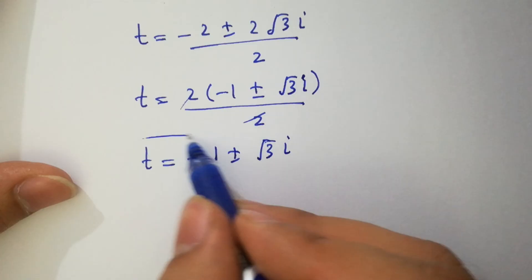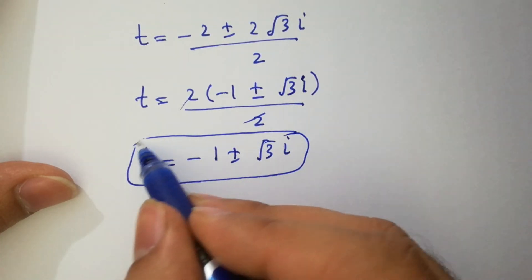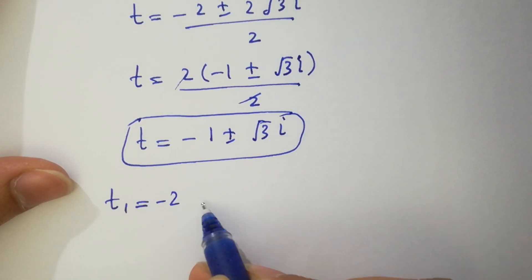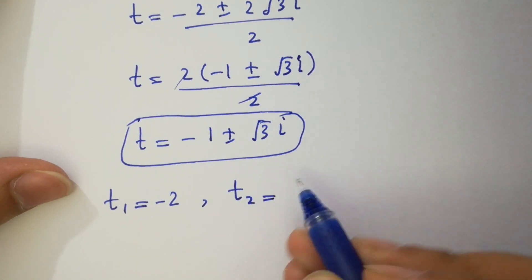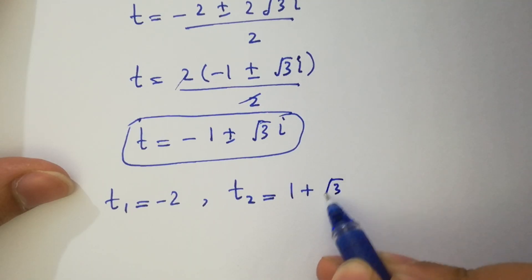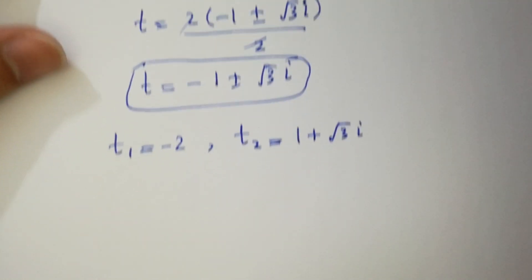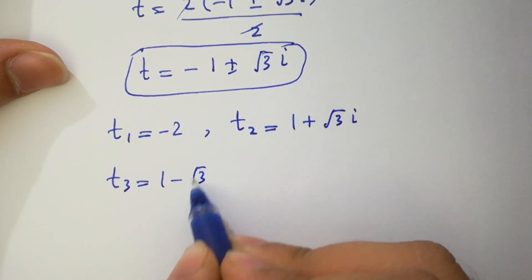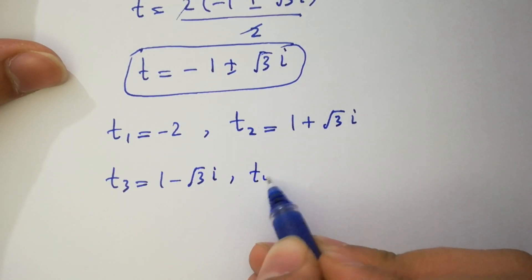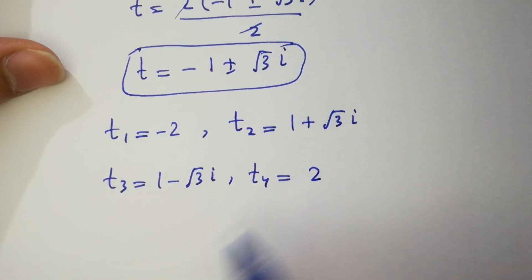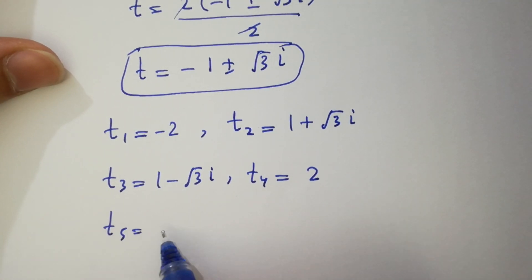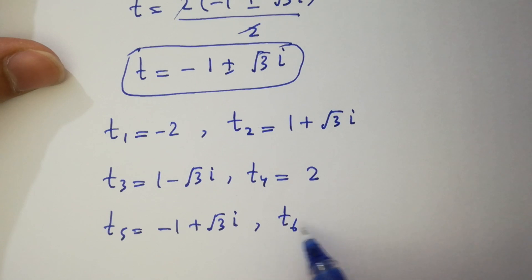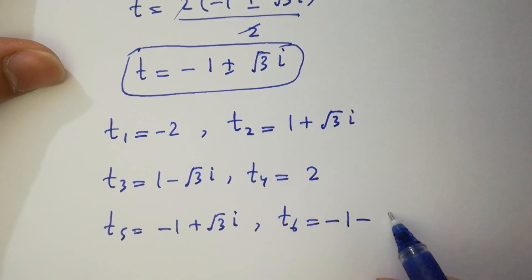This is also our complex solution. So finally we have 6 solutions: t₁ equals minus 2, t₂ equals 1 plus square root of 3 i, t₃ equals 1 minus square root of 3 i, t₄ equals 2, t₅ equals minus 1 plus square root of 3 i, and t₆ equals minus 1 minus square root of 3 i.